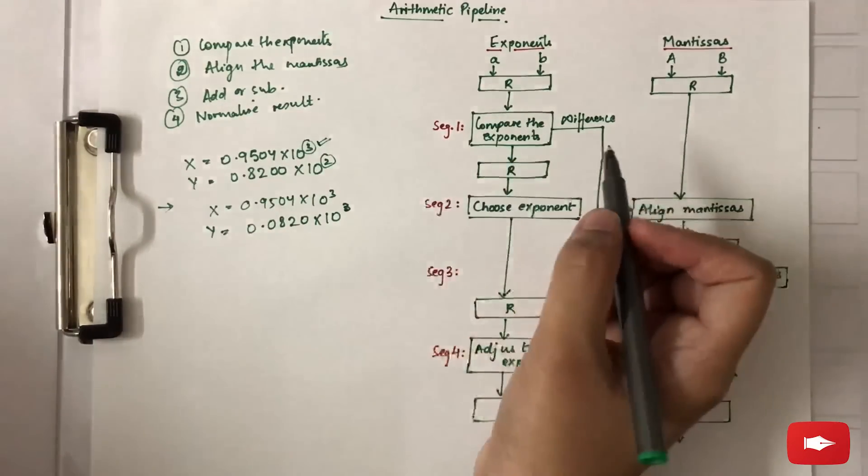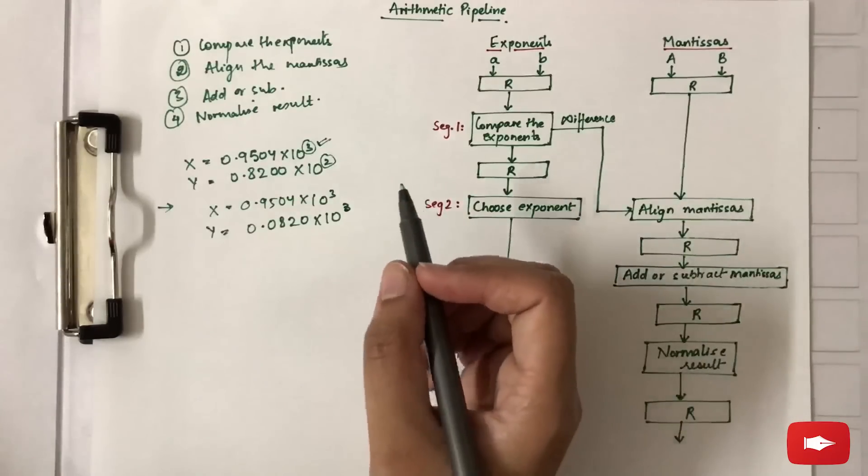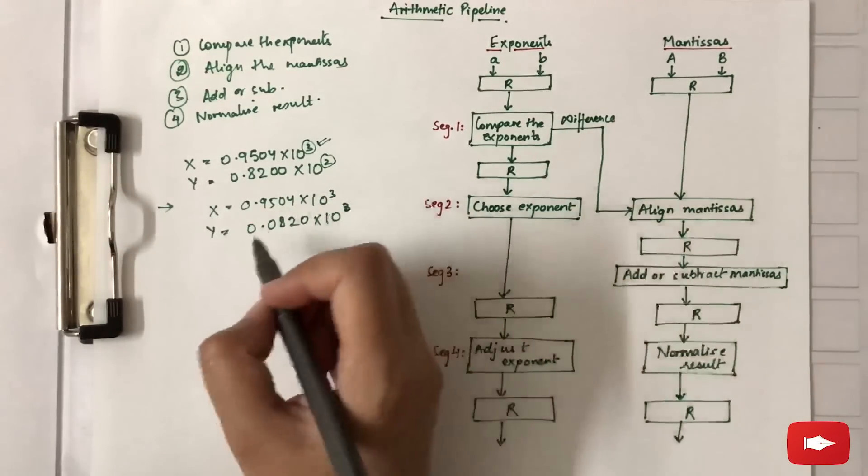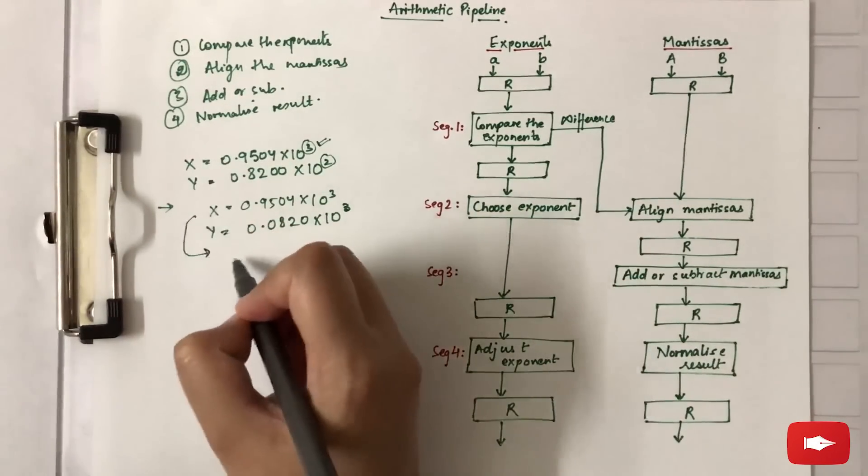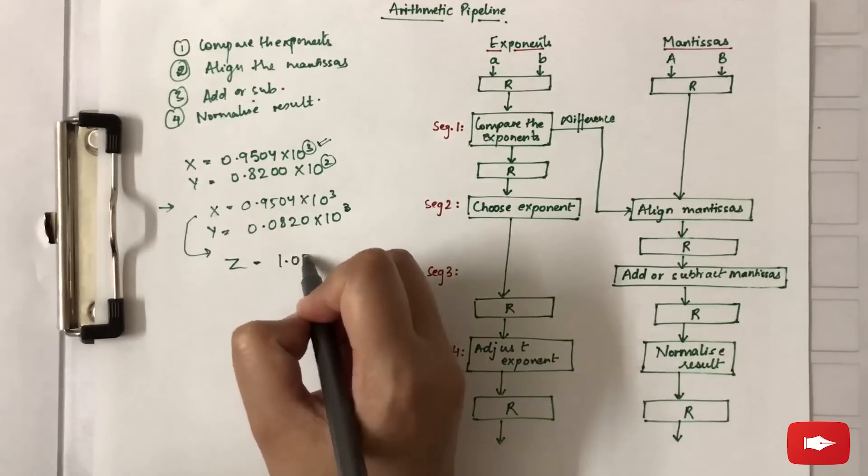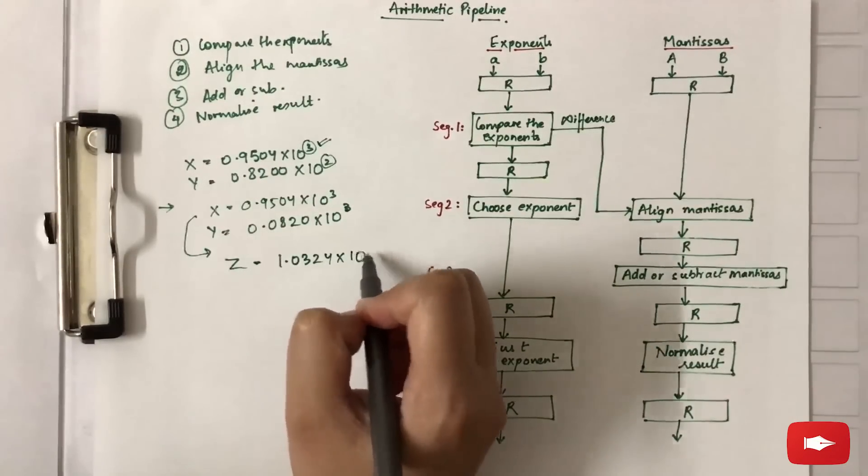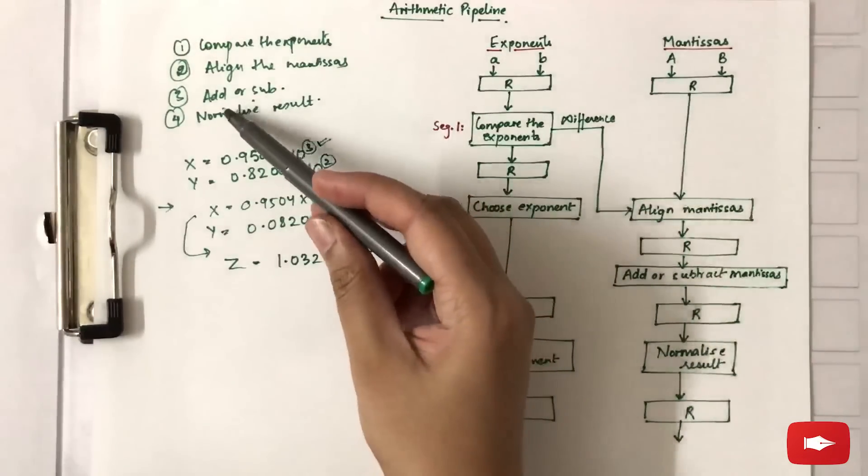We will perform the operation, that is add or subtract. For example, if we are adding, the result we get is 1.0324 × 10³. We have performed the addition. The last step is to normalize the result.